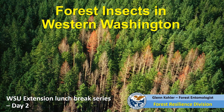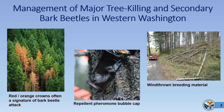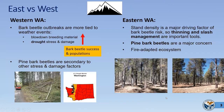I cover the whole state of Washington and provide technical assistance to state and private landowners, as well as forest insect monitoring and reporting on conditions and trends. This series is focused on western Washington. Today we're going to be talking about management of bark beetles — primary tree-killing and secondary bark beetles — which we covered in terms of identification and biology yesterday.